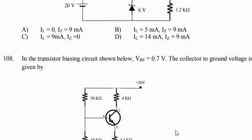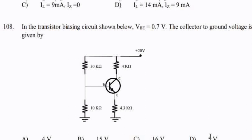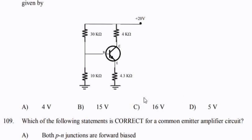Next: in the transistor bias circuit shown below, VB equals 0.7V; the collector-to-ground voltage is given by. Applying the voltage divider rule, option C — the answer is 16V.